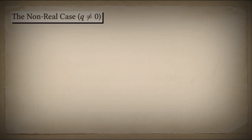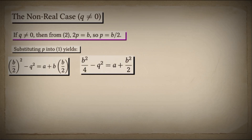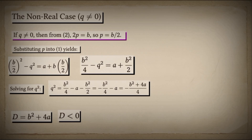From the first equation, if Q is not zero, we can divide both sides by Q and immediately find P equals B over 2. Now we substitute P equals B over 2 into our first equation. After some algebra, we find that Q squared equals B squared plus 4A, all divided by 4. Let's define D as B squared plus 4A — the discriminant. For Q to be real and non-zero, we need D to be negative. When D is negative, Q equals plus or minus the square root of negative D over 2.